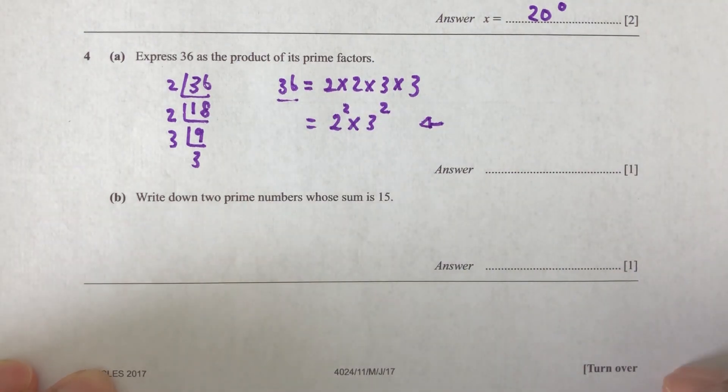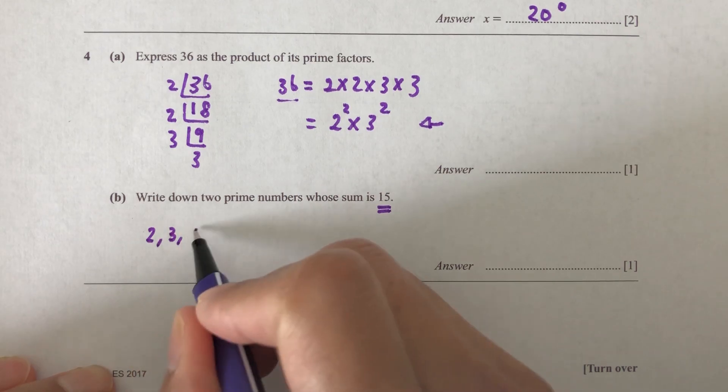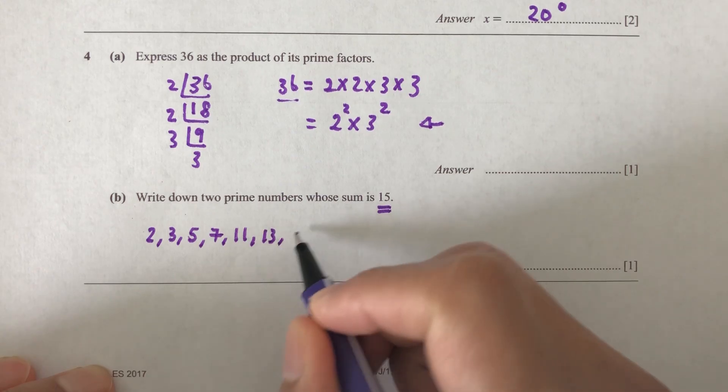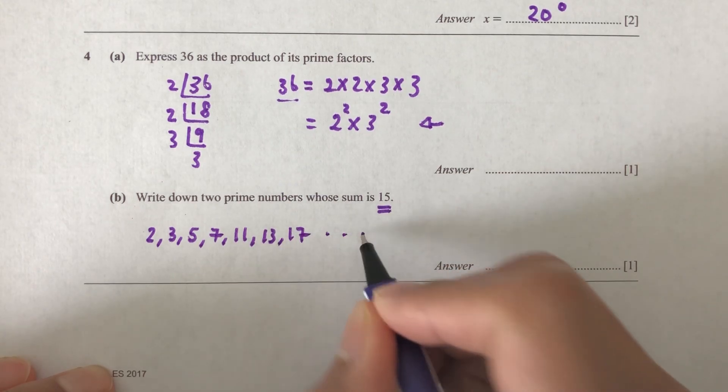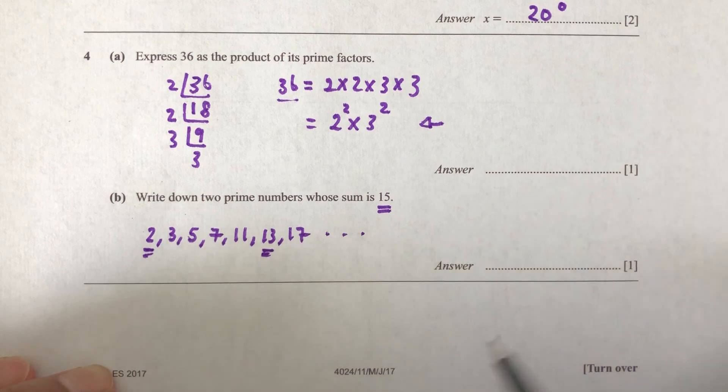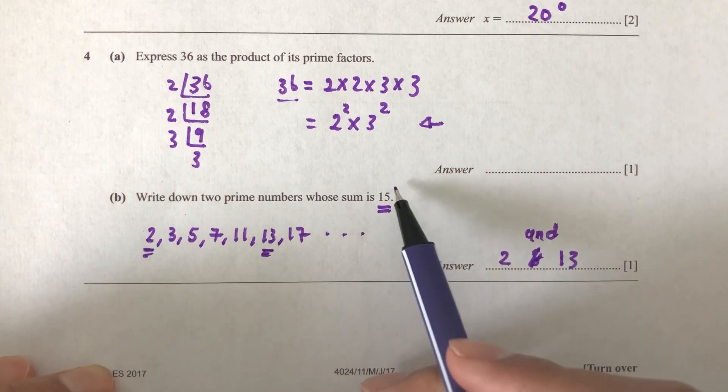So now part B. Write down two prime numbers whose sum is 15. So what prime numbers do you know? We know 2 is prime number, 3, 5, 7, 11, 13, 17, and so on. So let's find the sum of two prime numbers equal to 15. So if I do 13 plus 2 is 15. So 2 and 13 are my two prime numbers.